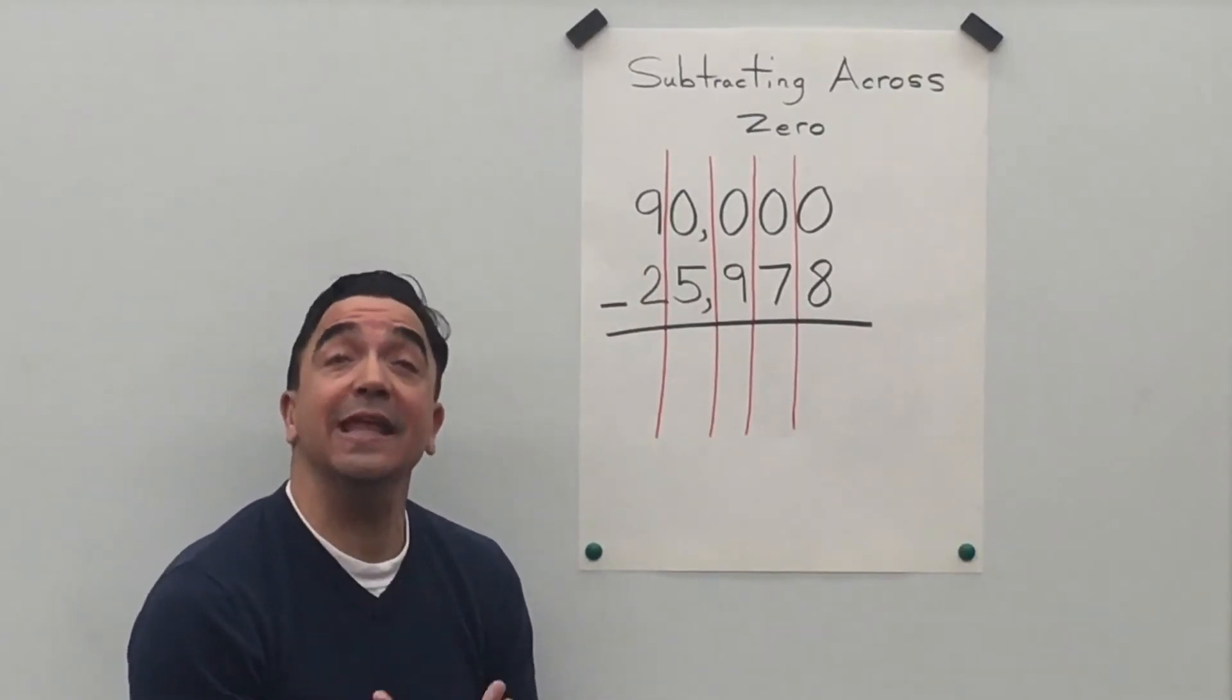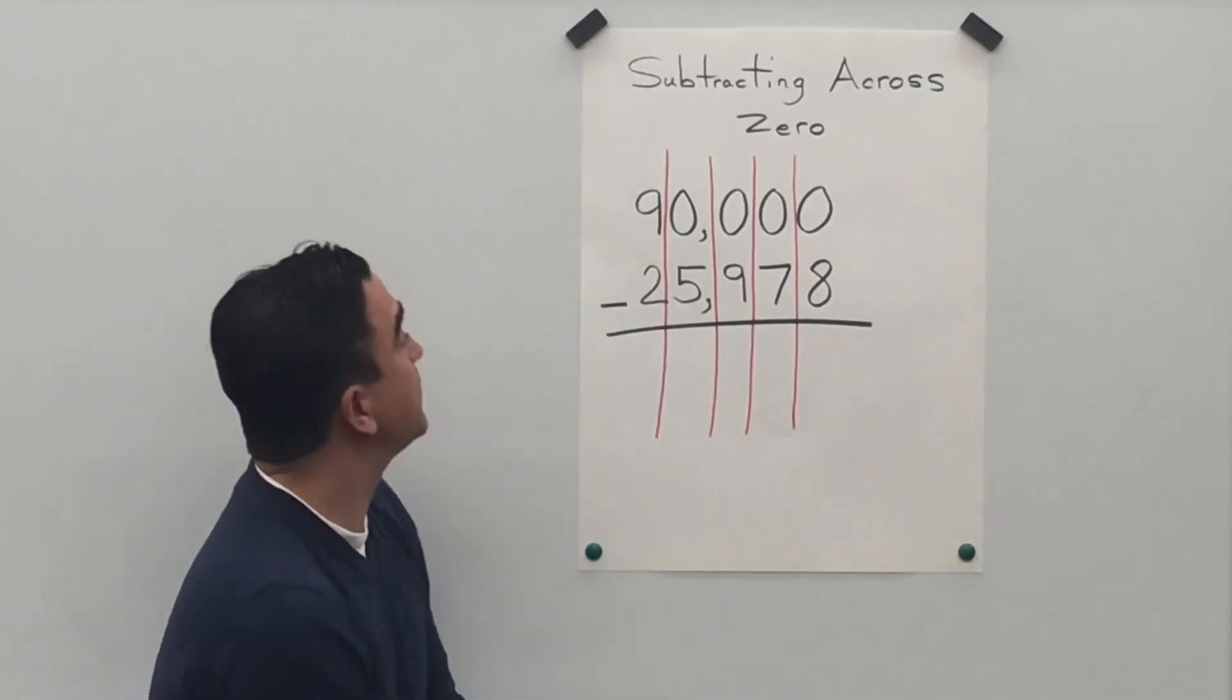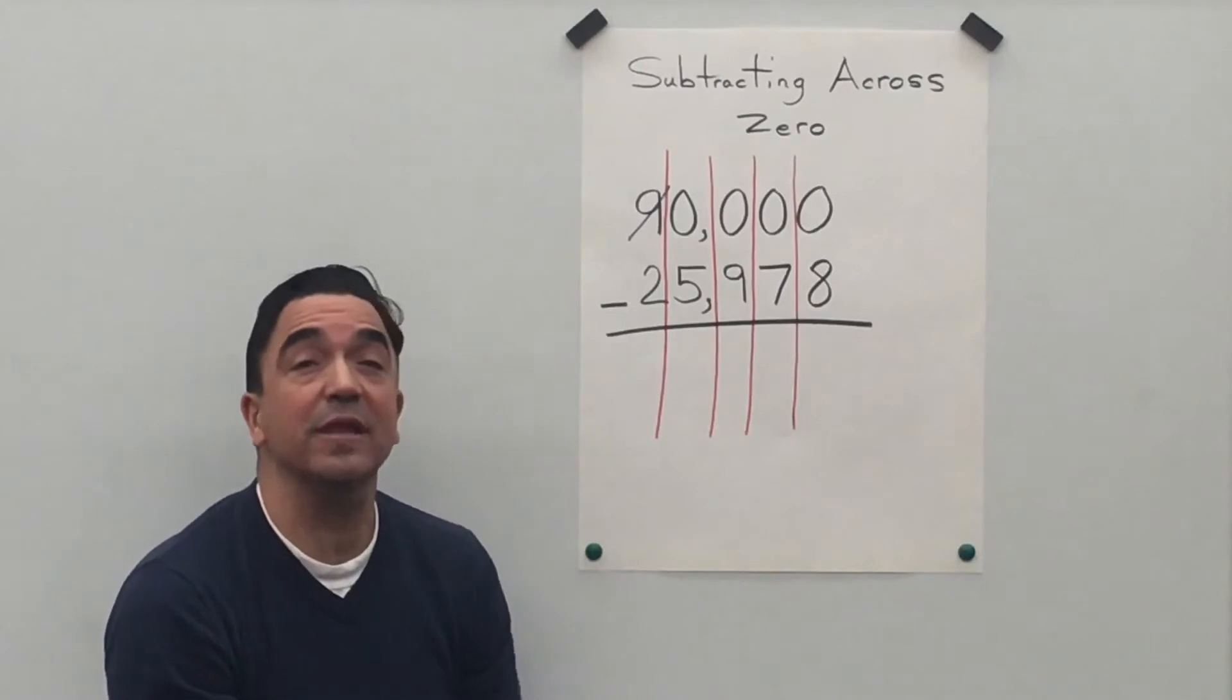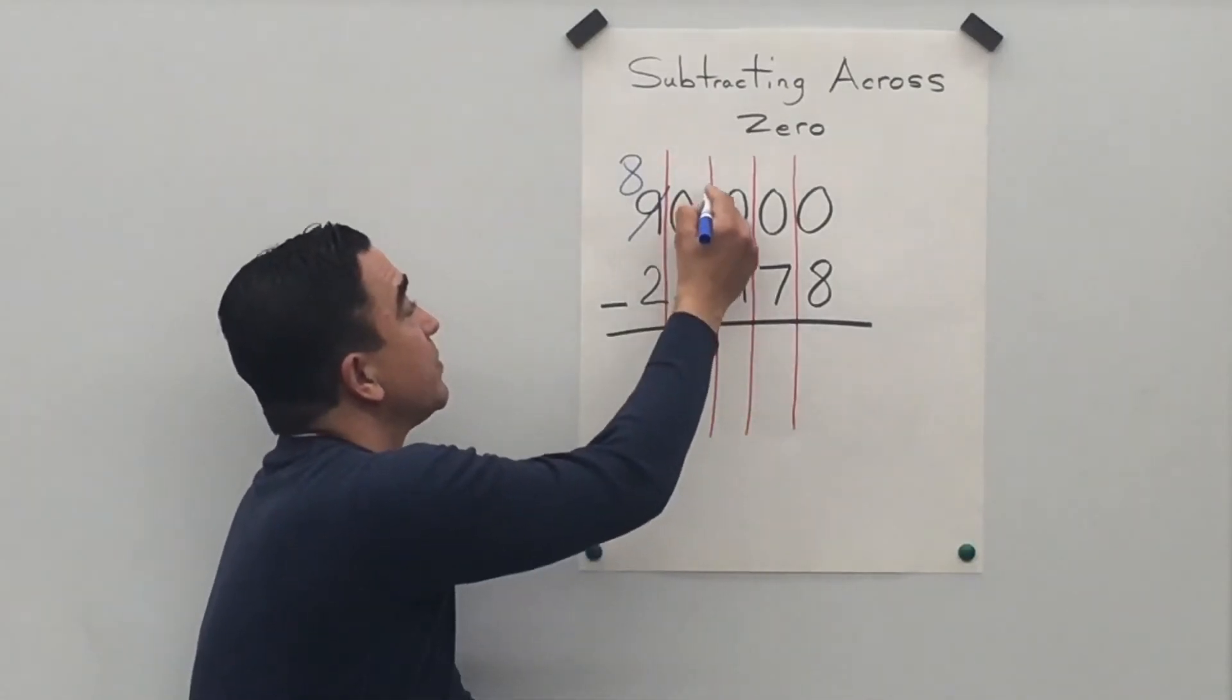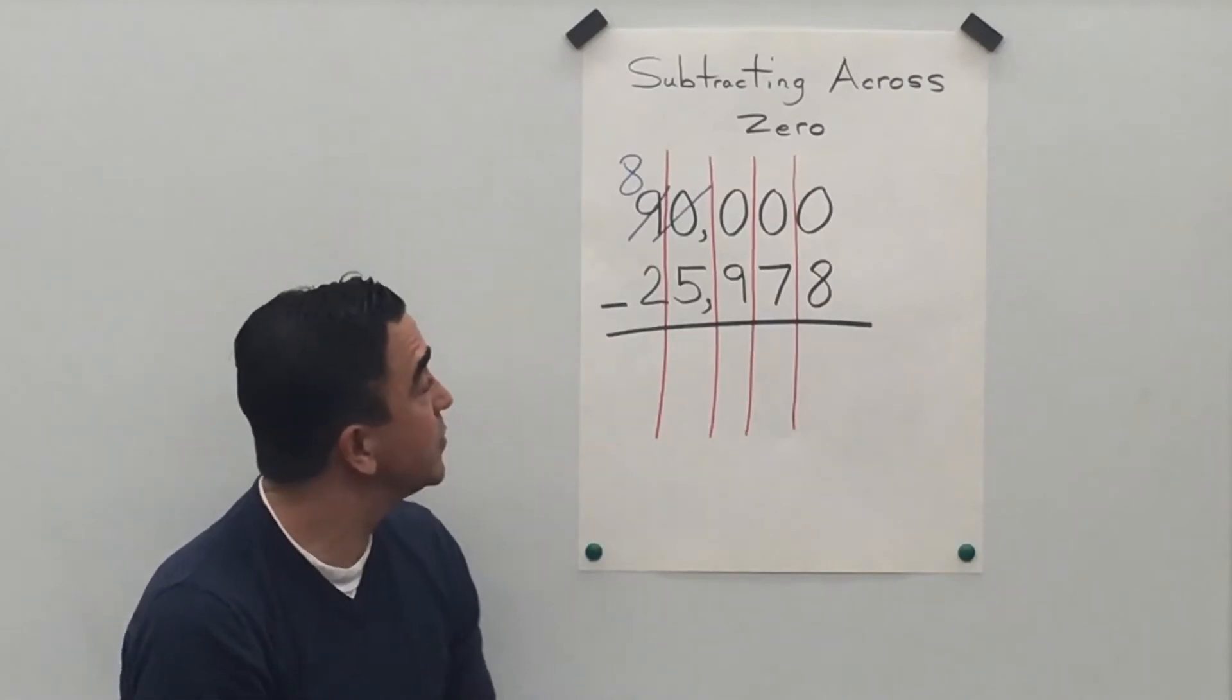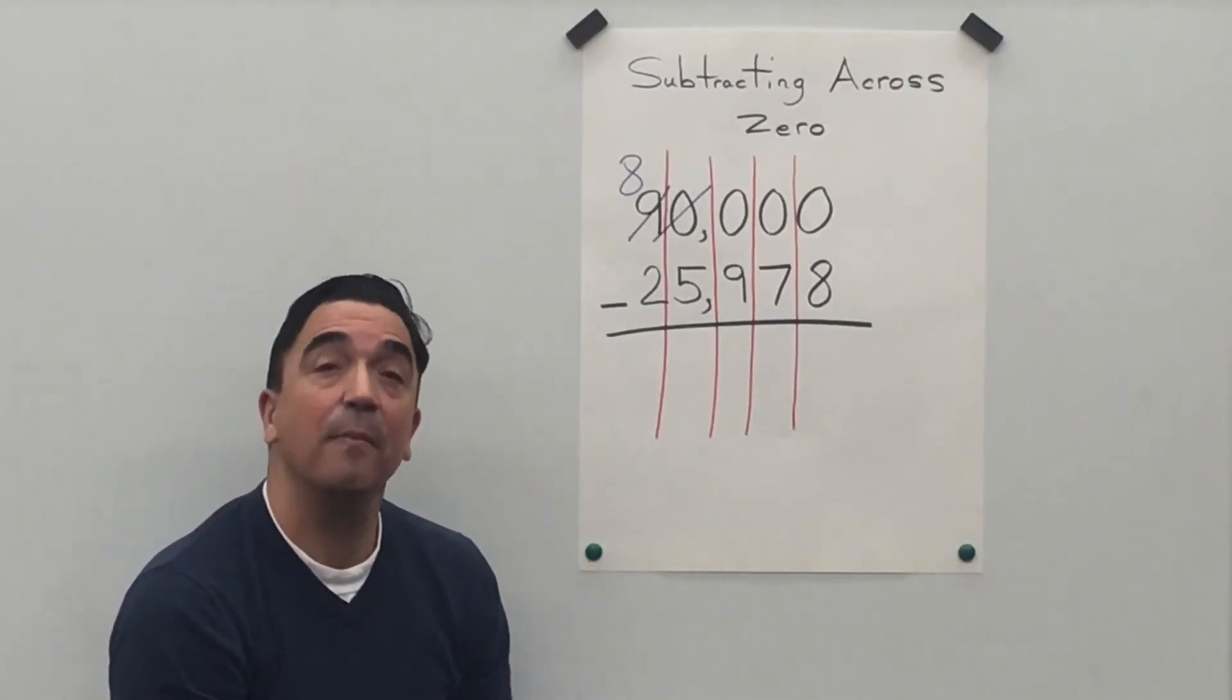So we're going to need to borrow from the ten thousands place. Take away one from the nine. We have eight left. Our zero in the thousands place becomes a ten.